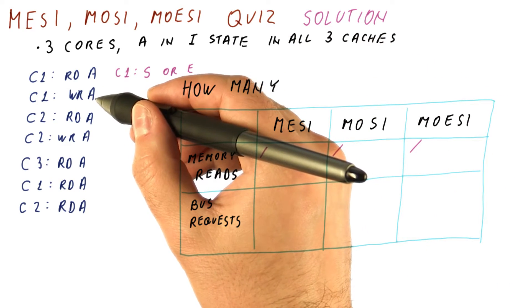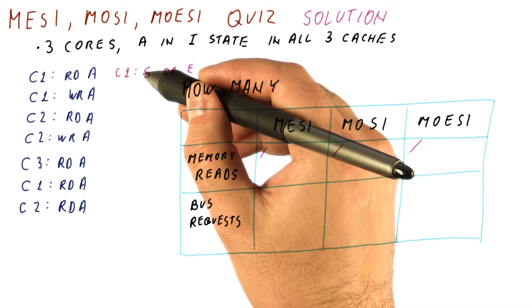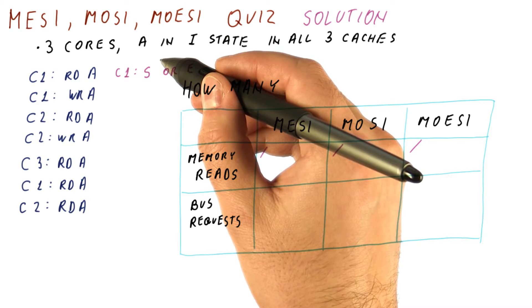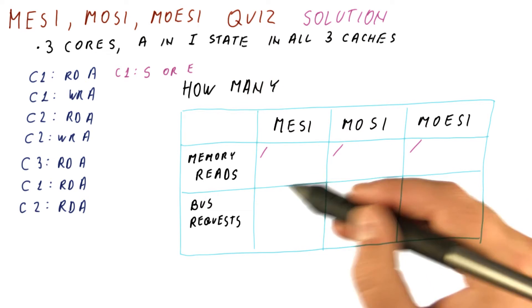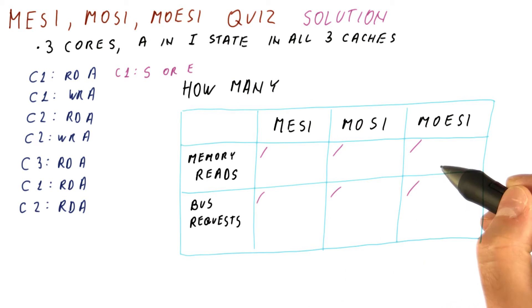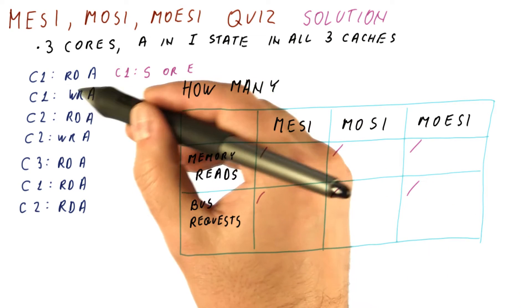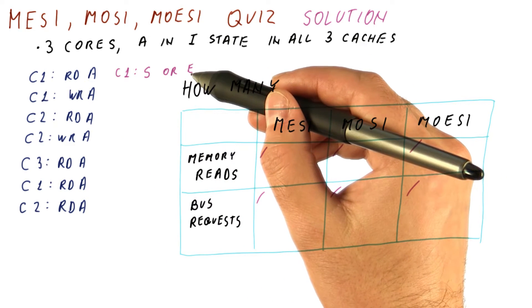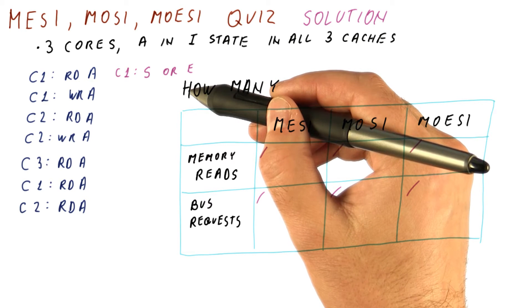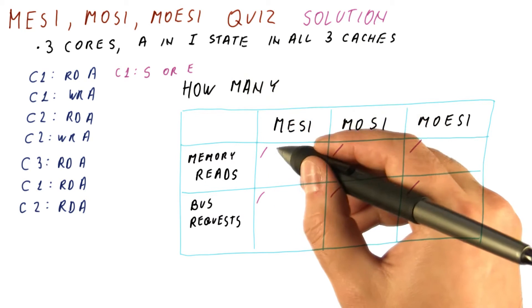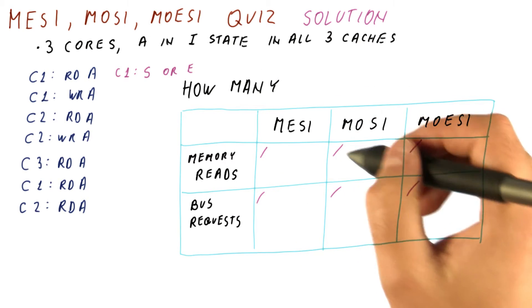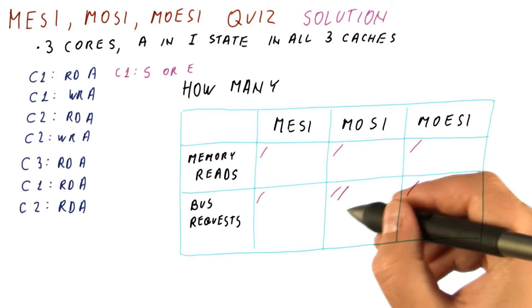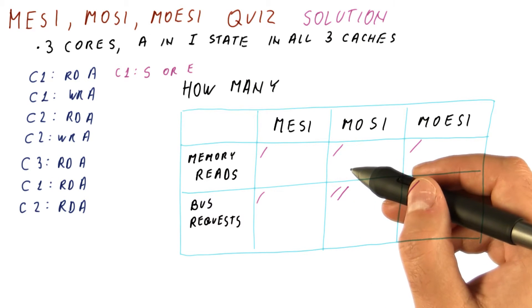When C1 writes to A, if we have the block in the shared state, we need to put an invalidation request on the bus, because we don't know whether there are any other sharers. And of course, if we did a memory read, we also had a bus request in each of the three. Now when we do a write A, for protocols that have the E state, we just move to the modified state. We don't have to put anything on the bus or read memory. But for MOSI, we were in the shared state. We have to put an invalidation request on the bus. There is no memory read here. We already have the data.